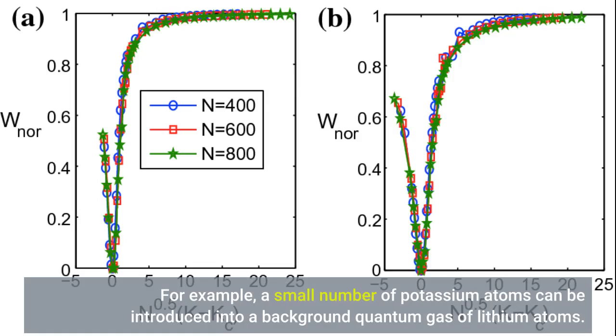For example, a small number of potassium atoms can be introduced into a background quantum gas of lithium atoms.